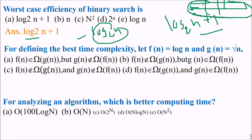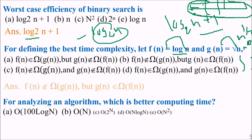For determining the best time complexity: if f(n) equals log n and g(n) equals square root of n, what can you say? Log n is always better — it grows more slowly than n to the power of 0.5. The answer is that f(n) belongs to omega of g(n), but f(n) does not belong to big O of g(n). That is, g(n) does belong to omega of f(n). So we take this as the answer — option two.